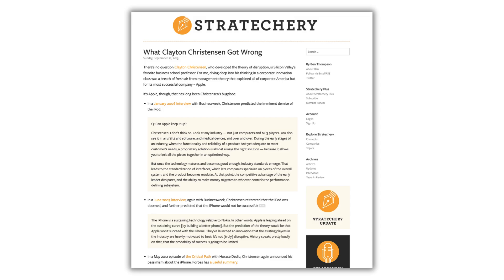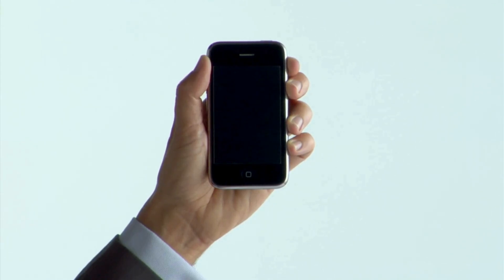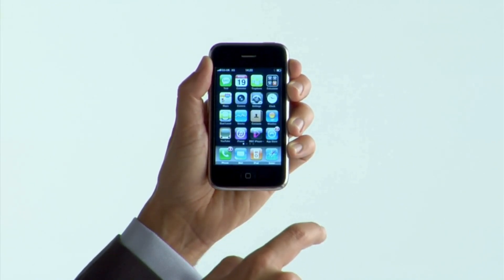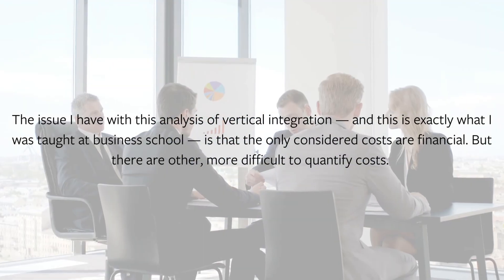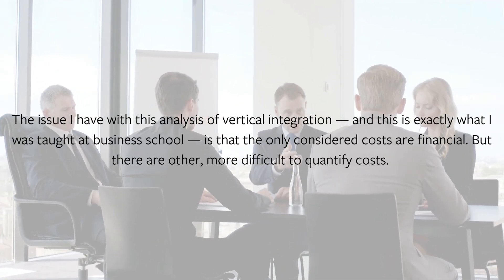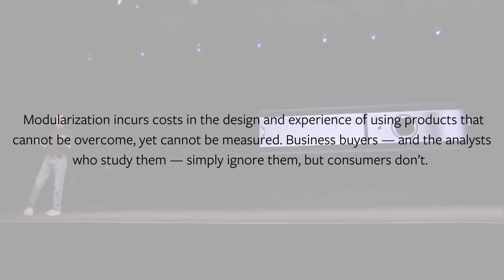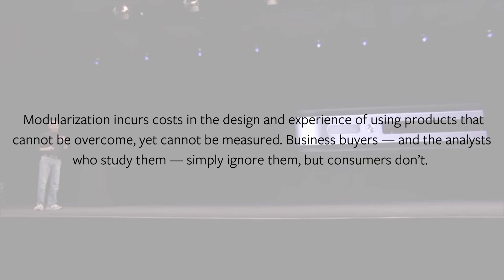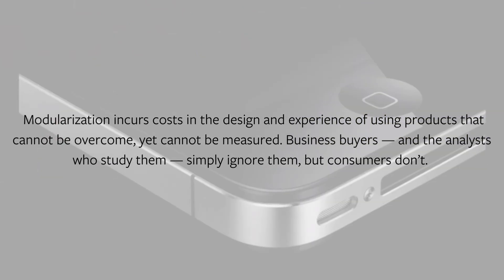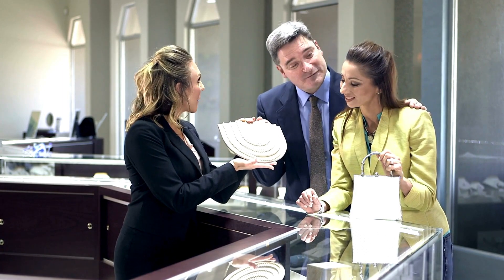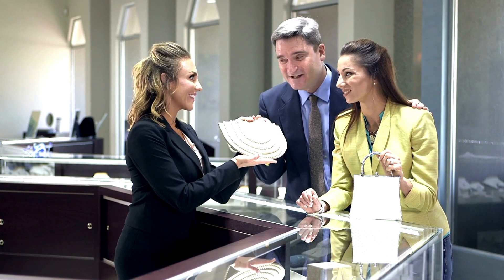I made my own contribution to this literature in 2013's What Clayton Christensen Got Wrong. My dispute wasn't with the above excerpt, but rather the follow-on argument that integrated solutions would eventually overshoot customers and be disrupted by modular alternatives. It was on this basis that Christensen regularly predicted that Apple would lose its lead in smartphones, but I didn't think that would happen in a consumer market where there were costs to modularization beyond those measured by economists. The issue I have with this analysis of vertical integration — exactly what I was taught in business school — is that the only considered costs are financial. Modularization incurs costs in the design and experience of using products that cannot be overcome, yet cannot be measured. Business buyers and the analysts who study them simply ignore them, but consumers don't. Some consumers inherently know and value quality, look and feel, and attention to detail, and are willing to pay a premium that far exceeds the financial costs of being vertically integrated.